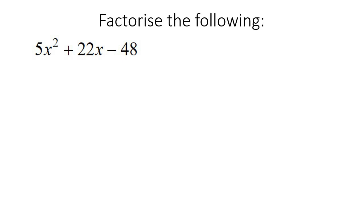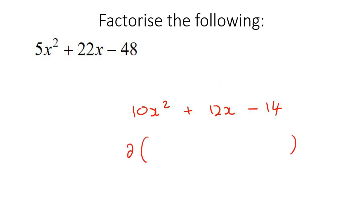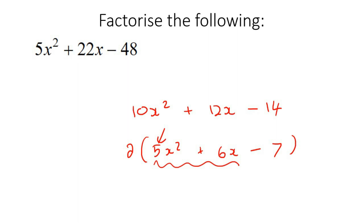Here's our next example. There is no common factor that goes into 5, 22, and 48. By the way, sometimes there is a common factor — for example, if you had 10 plus 12 minus 14, you'd take out 2 and be left with 5 plus 6 minus 7, which still has a number in the front. Then you'd still do this same method.